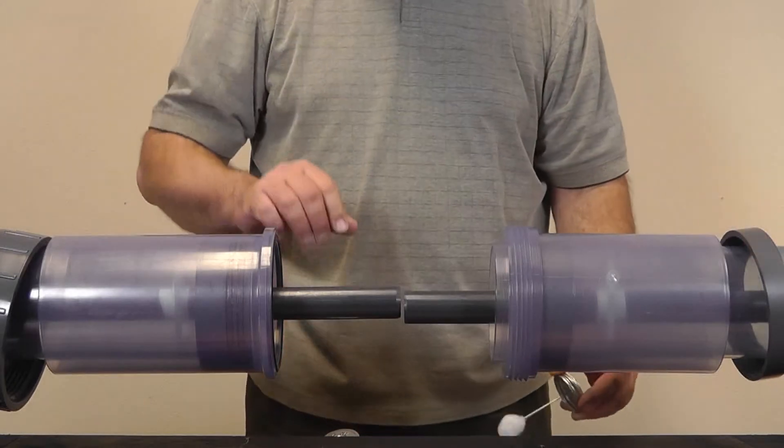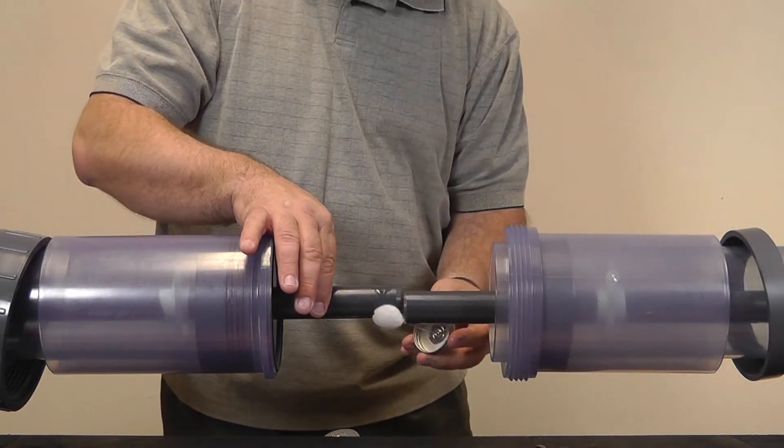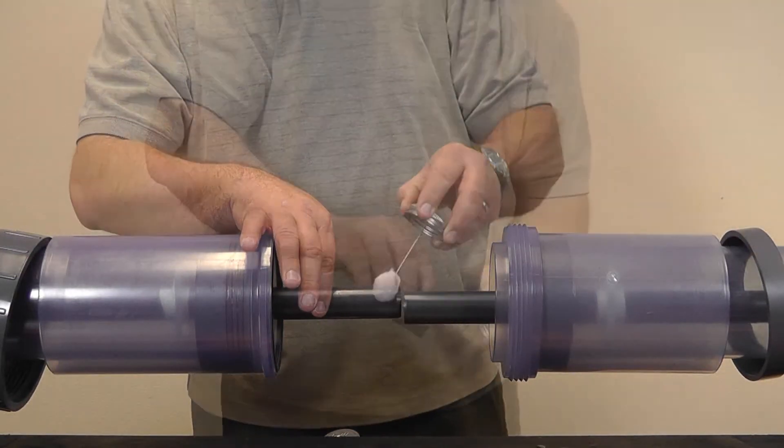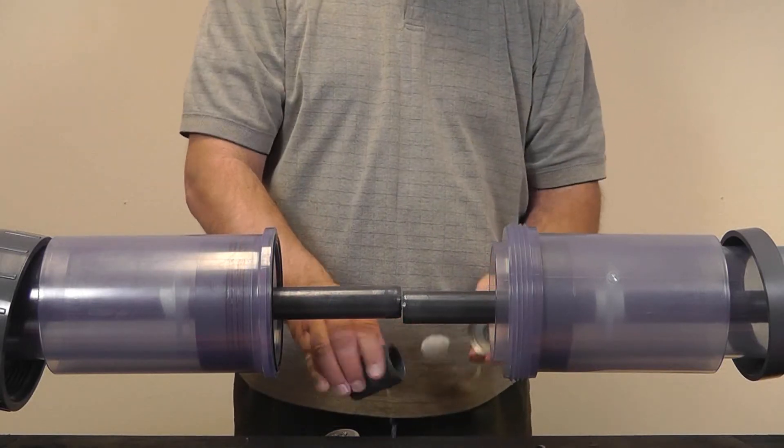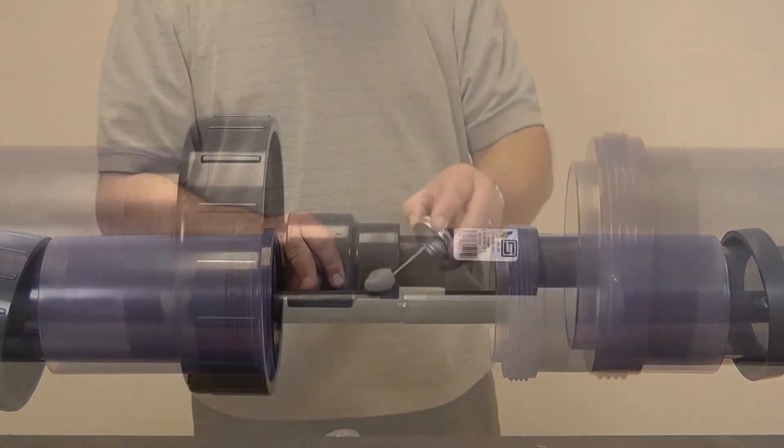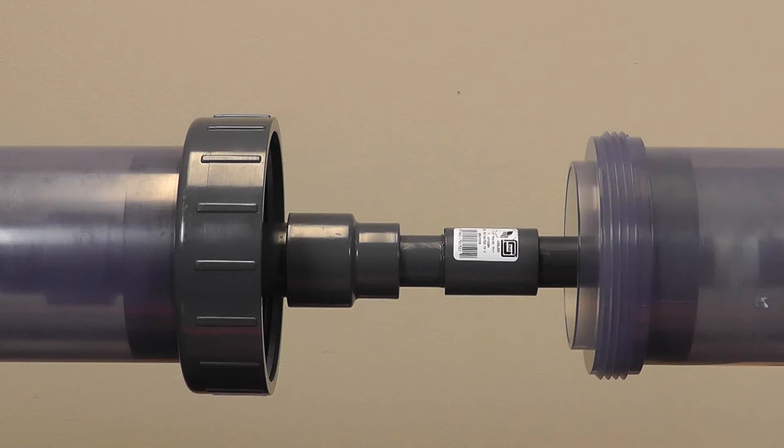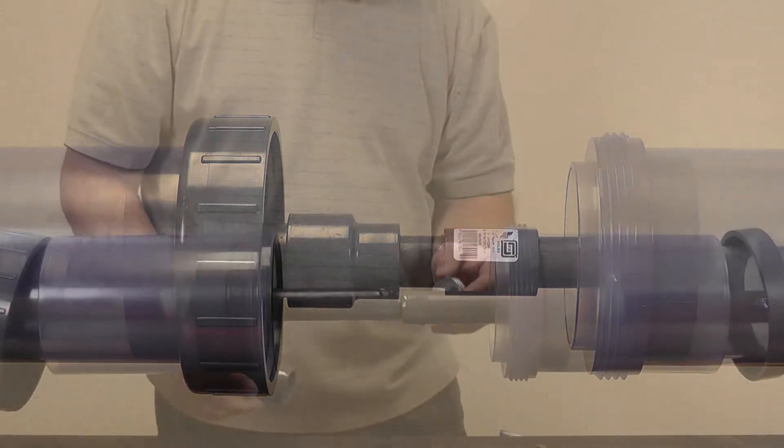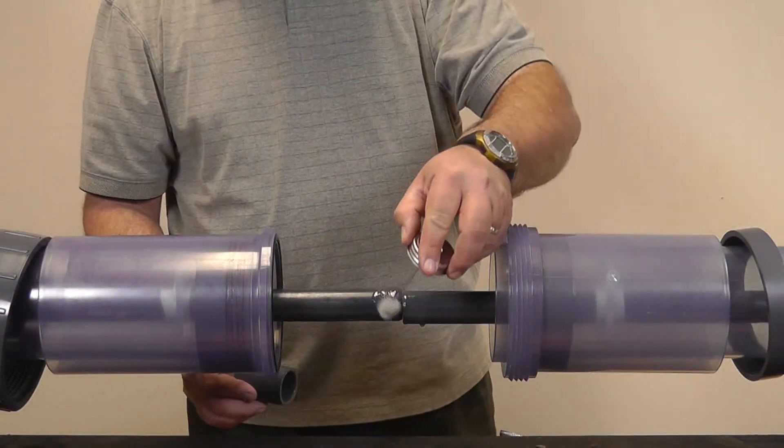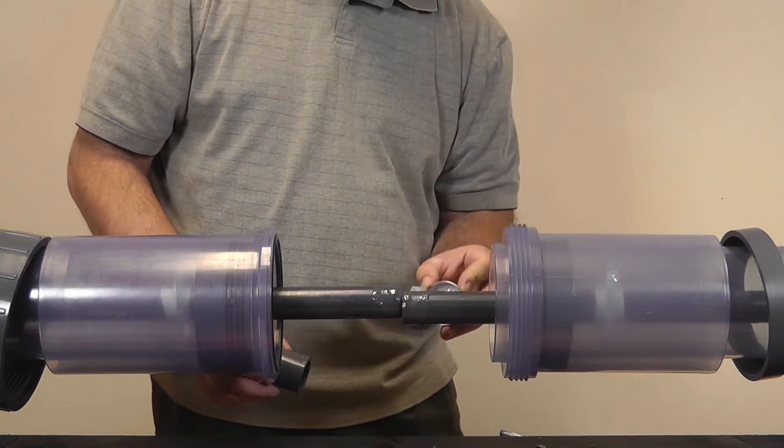Now we're going to connect the carrier pipe together using the Spears 1-inch Schedule 80 PVC coupling. Depending on the planning and layout of your system, another good option would be to use the Spears expansion joint. The Spears expansion joint combined with Spears double containment union closure also can help you address expansion and retraction within your double containment system.